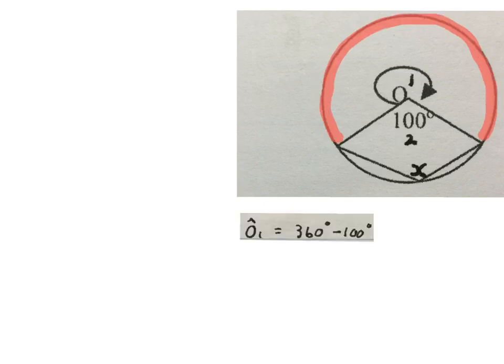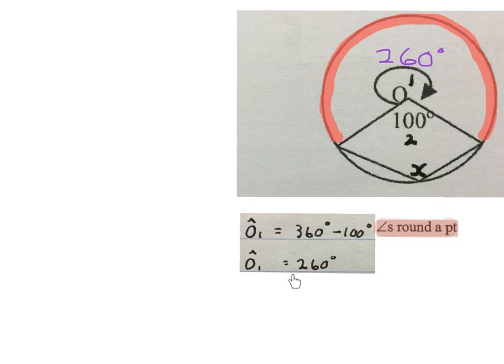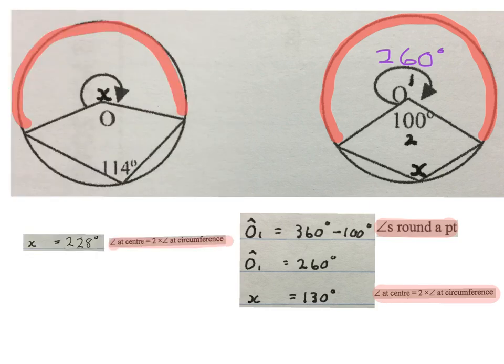So now we work out the size of angle O1. And if you look creatively, you'll see it's angles around a point. So it will be 360 degrees altogether. So I wrote O1 equals 360 minus the 100. Do you have to give your reason? Angles around a point. The answer is O1 is 260 and I immediately write it in on my sketch. Then you write X equals 130 degrees with your reason. Angle at center is 2 times angle at circumference. Please stop the video and look at these two problems and see if you understand how it works.